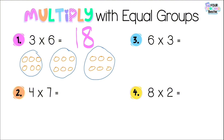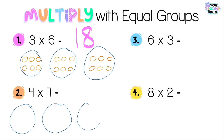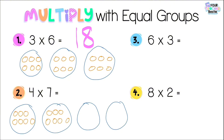Let's do number two: four times seven, or four groups of seven. I'm going to draw four groups — one, two, three, four — then draw seven objects inside each group: one, two, three, four, five, six, seven, repeated four times. Now I'll skip count by seven: seven, fourteen, twenty-one, twenty-eight. So twenty-eight is the product.